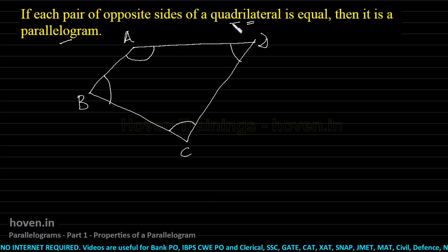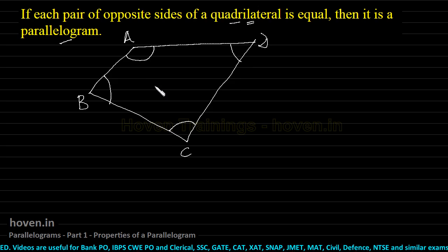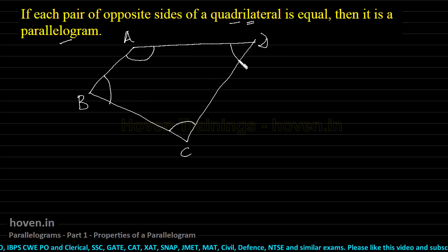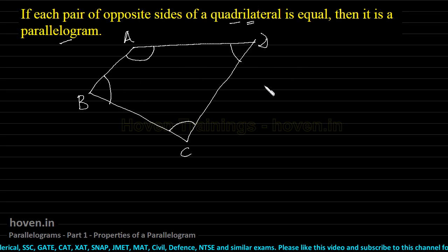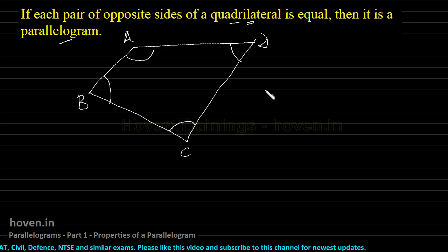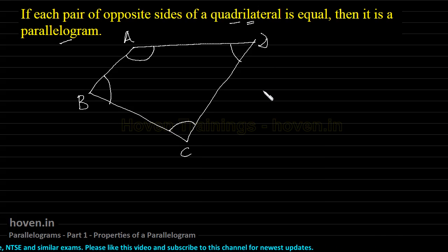A quadrilateral has an angle sum property. The angle sum property states that the sum of the interior angles of a quadrilateral is 360 degrees. If you remember the case of a triangle, the interior angles of a triangle add up to 180. But in case of a quadrilateral, the interior angles add up to 360 degrees.